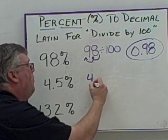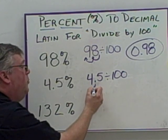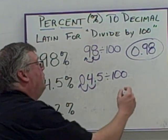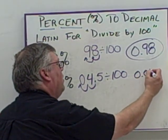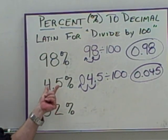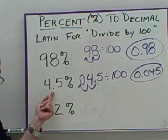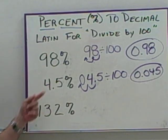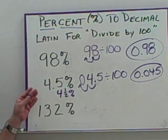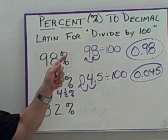Here we have 4.5%, and we need to divide by 100 to convert. We move the decimal one, two place values to the left. Since there's no place value there, we add in a zero, giving us 0.045. A lot of people get confused when they see a decimal in the percent and think it's already converted — percents can contain decimals. Converting means getting rid of the percent sign and dividing by 100.